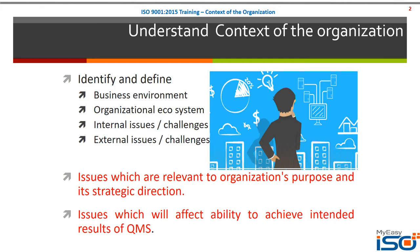Let's be specific — what is the intended result of QMS? For some organizations it can be high profitability; for some it would be design innovation; for some it can be speed of delivery of services, projects, or products; for others it can be lower cost of production. It varies from organization to organization and can be one or a combination of these. What we are trying to do is identify the issues relevant to your strategic direction and those that will impact your capability to achieve this intended output.